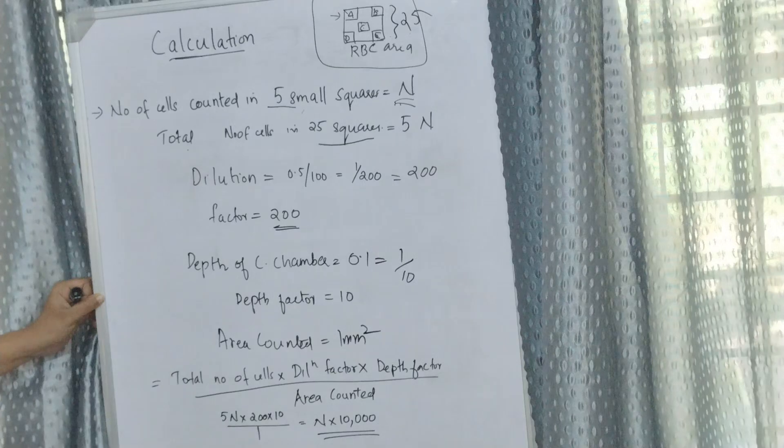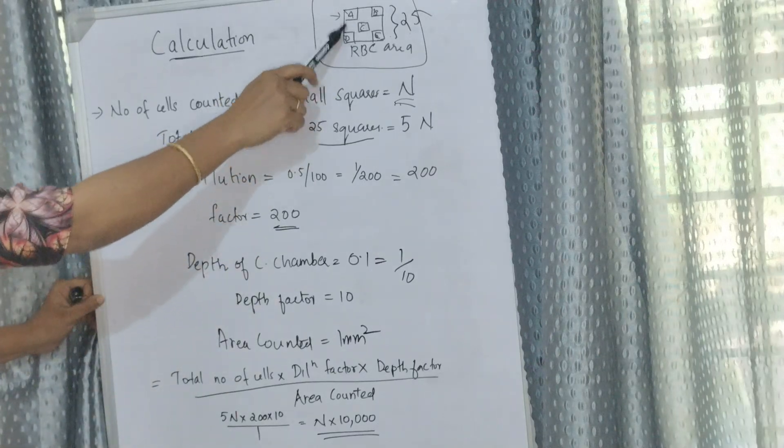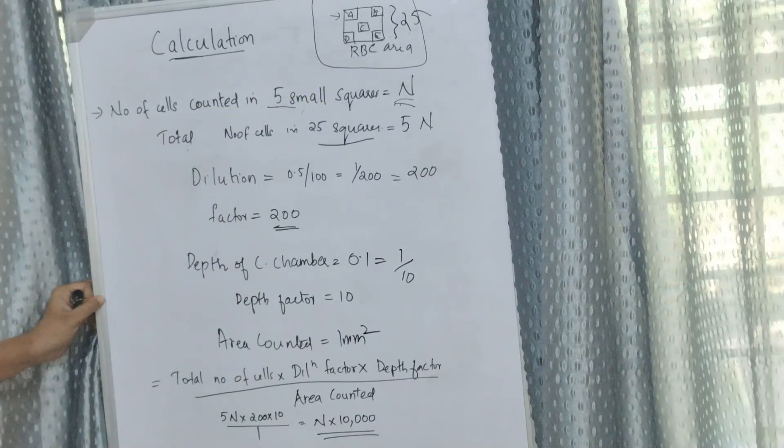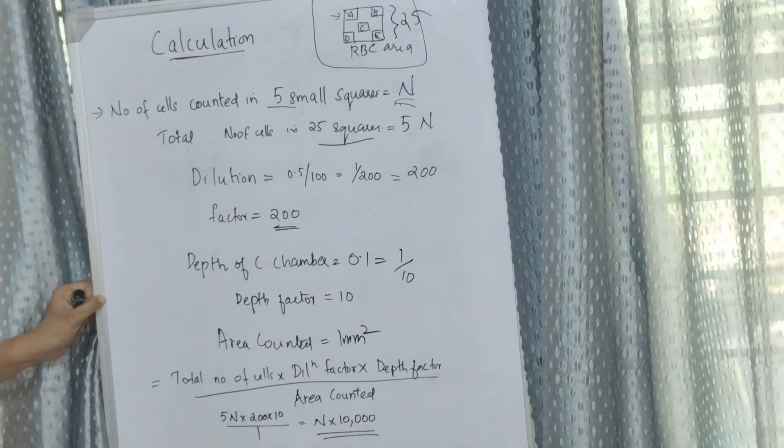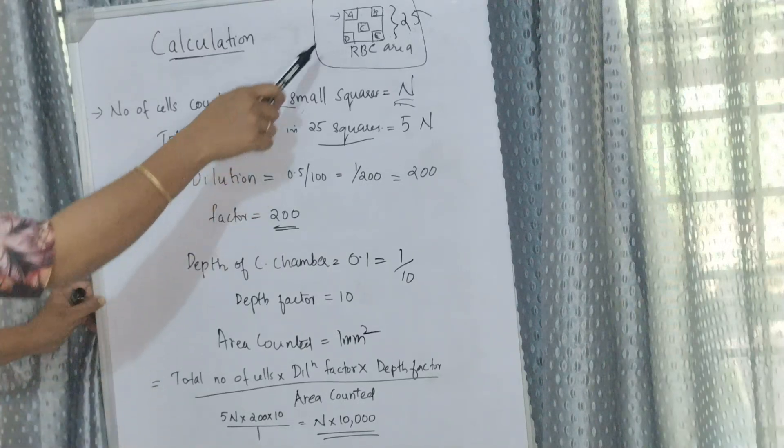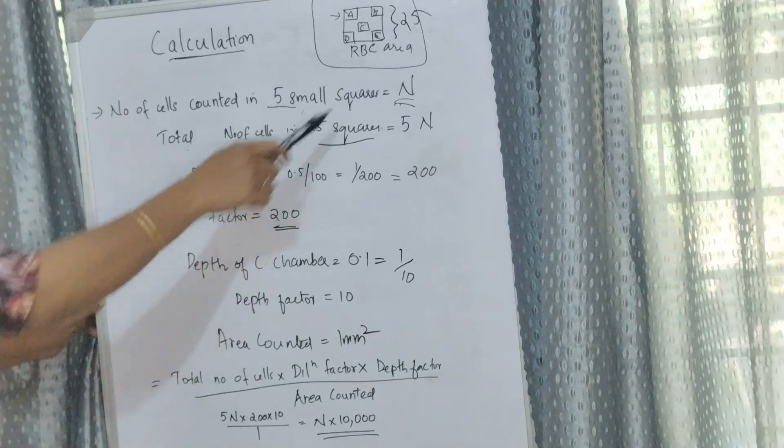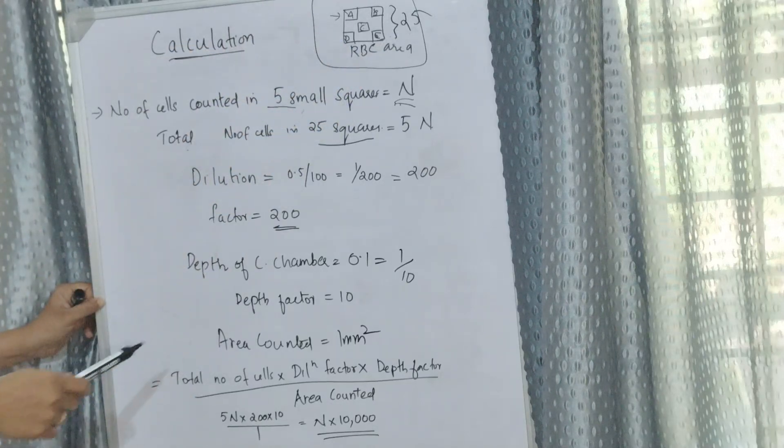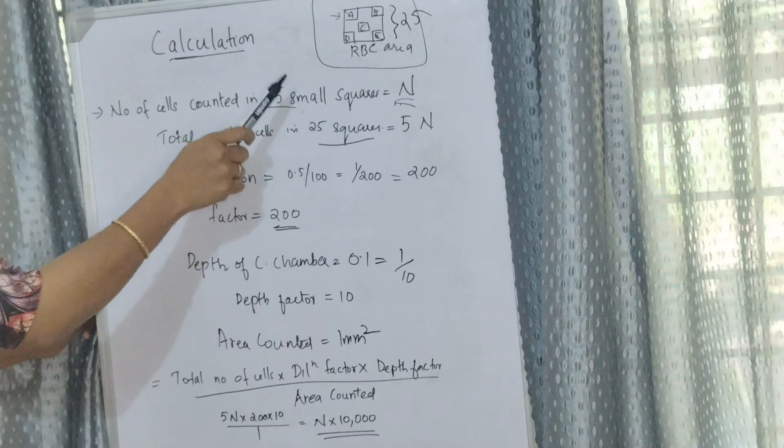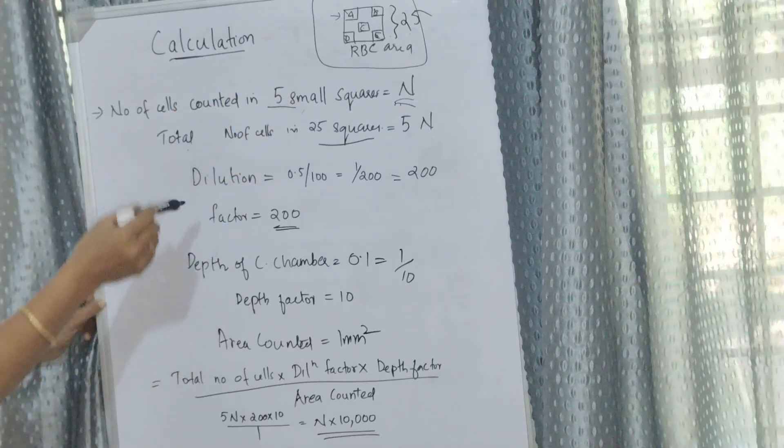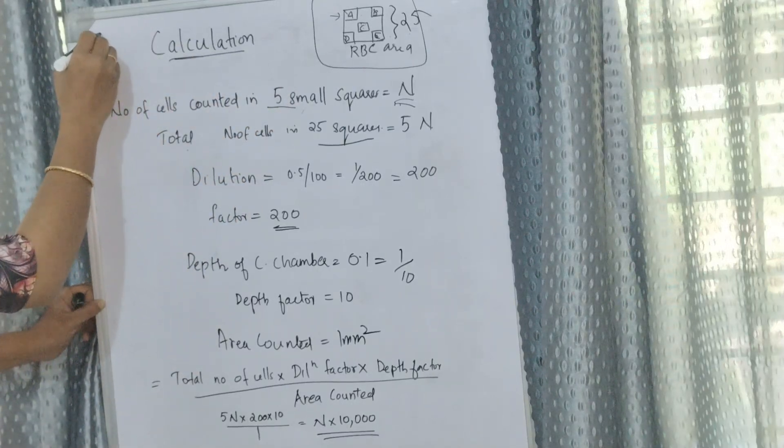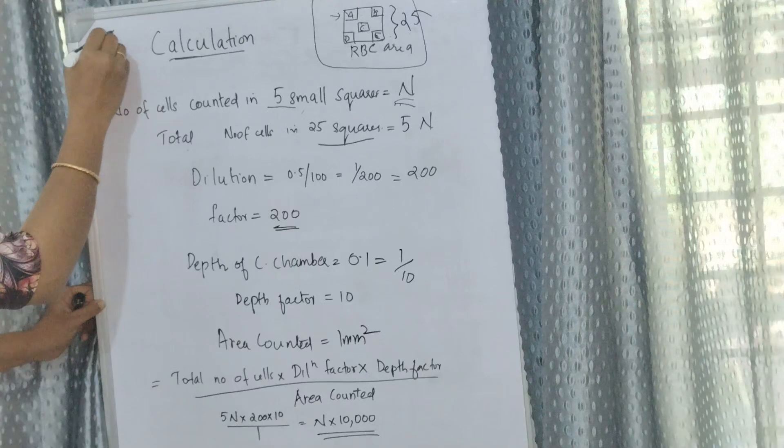But we are only counting five squares, right? So we have to indirectly calculate the cells present in all 25 squares. That means it is 25 by 5. So 5 times N is the total number of cells present in 25 squares. I hope you got it.